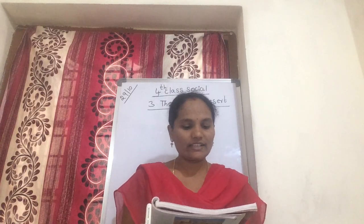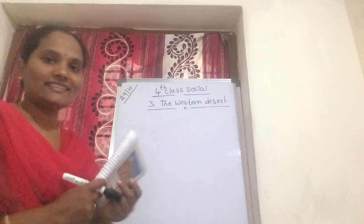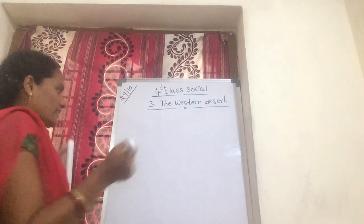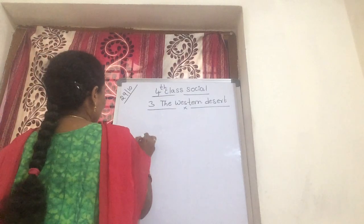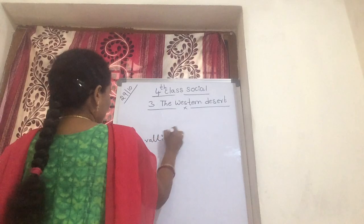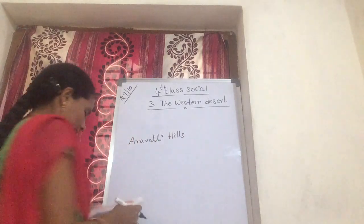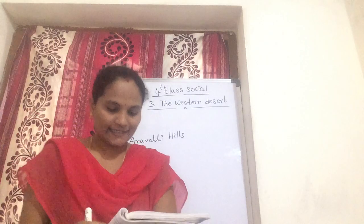The state of Rajasthan lies in the south western part of the northern plains. The Aravali Hills are divided into two parts. What is that? Aravali Hills. The Aravali Hills are divided into two parts.